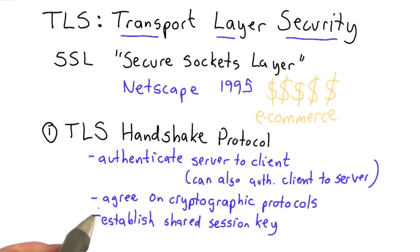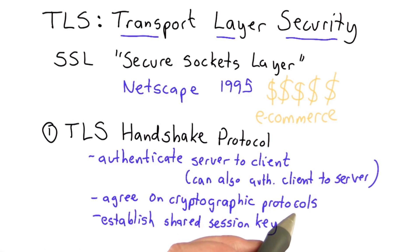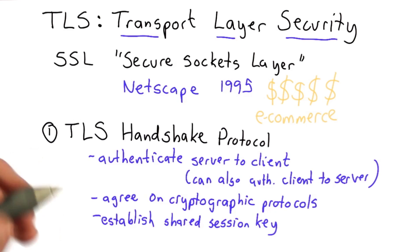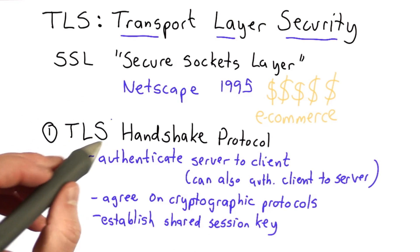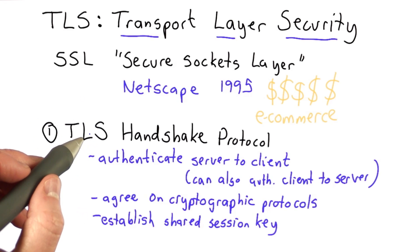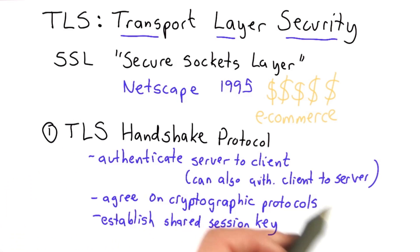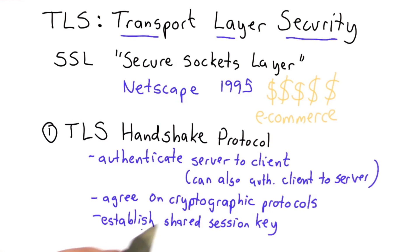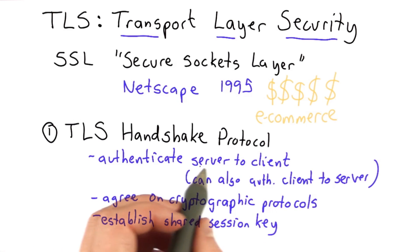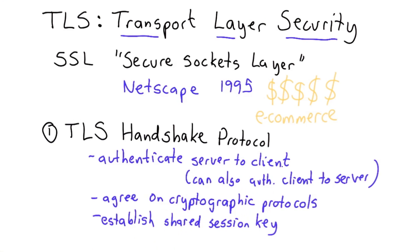The other outcomes of the Handshake Protocol are agreement on the cryptographic protocols to use. TLS is a very complex protocol that allows many different encryption algorithms to be used for different parts of it, and part of the Handshake is to agree on which ones to use. The final essential outcome is to establish a shared session key between the server and the client.